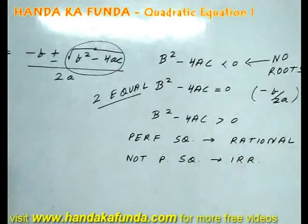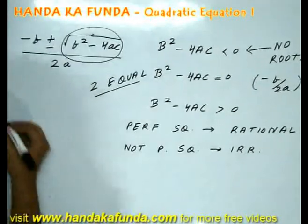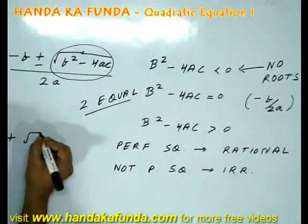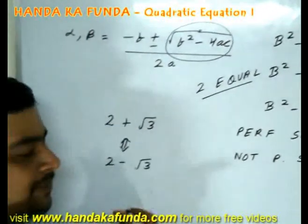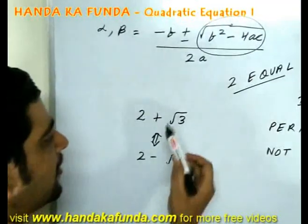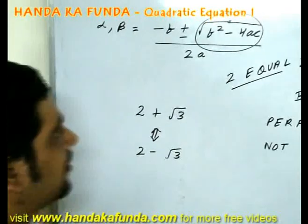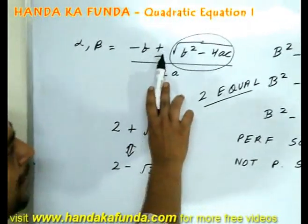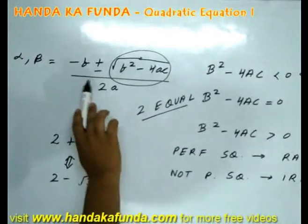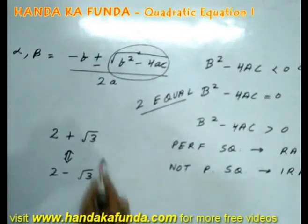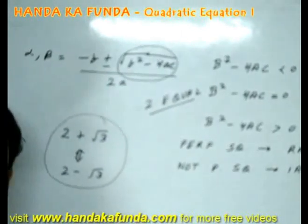If the roots are rational, then you cannot predict much. But let's say, if one of the roots is 2 plus root 3, then the other root has to be 2 minus root 3. Why will this happen? Because the square root portion emerges from b square minus 4ac part. So one of the roots will be minus b plus root 3 upon something, and the second portion will be minus b minus root 3 upon something. And that is why roots will always occur as pairs.